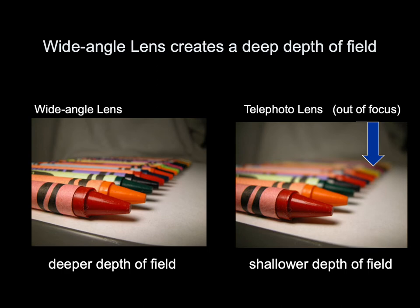Let's look at the same image composed with a wide-angle lens on the left and a telephoto lens on the right to explore depth of field. In the image on the left, counting back, about six or seven crayons are sharp and in focus — you can use the shadows under the crayons to help establish what's in focus. Compare that to the telephoto lens composition on the right, where only about two crayons are clear, sharp, and in focus.